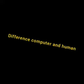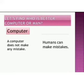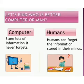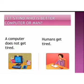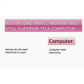Now let us find the differences between humans and computers. Computer does not make mistakes; humans can make mistakes. It stores a lot of information and never forgets, but humans forget. Computer does not get tired, but humans get tired. It needs electricity to work, but humans do not need electricity. Humans can take their own decisions; computers cannot.